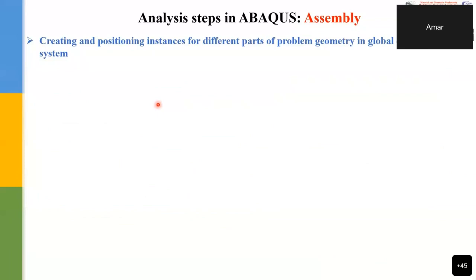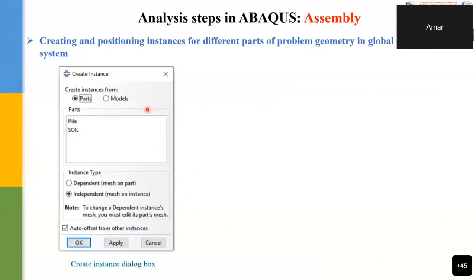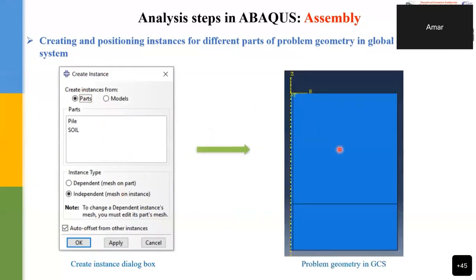In the Assembly module, the different parts are positioned and assembled in a global coordinate system. This is done via the Create Instance dialog box, where the parts are selected and assembled as shown.